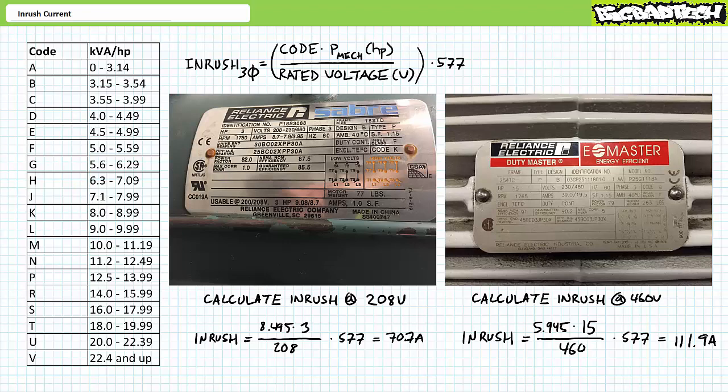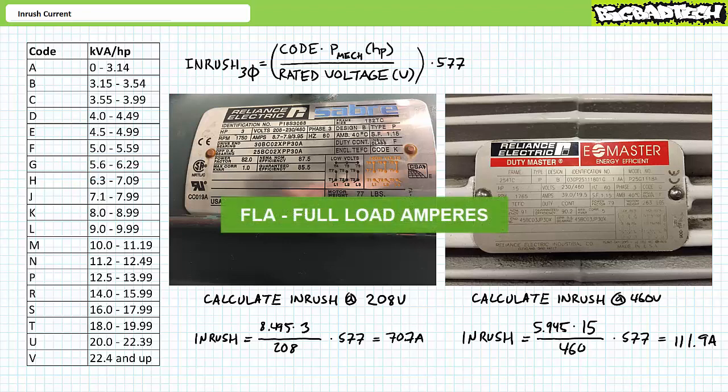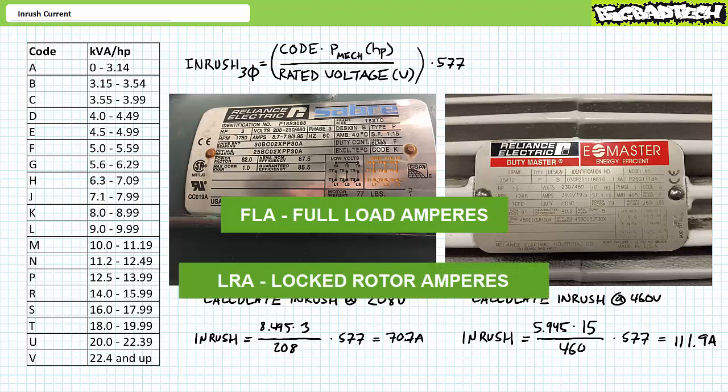It should be noted that some motor manufacturers take it upon themselves to perform inrush calculations in advance and explicitly state the expected inrush right on the motor nameplate. The entry FLA stands for full-load amperes — another way of stating rated current, meaning it is the current drawn per phase when the motor is producing its rated mechanical power output. If you ever see the entry LRA, this is the inrush current, where LRA stands for locked rotor amperes — the magnitude of the momentary surge of current drawn per phase when the rotor is locked and the motor is suddenly energized by full voltage. The LRA entry on the motor nameplate saves you the trouble of performing inrush calculations yourself.